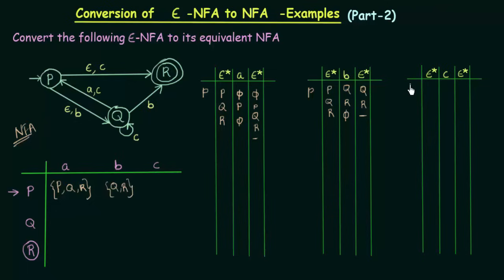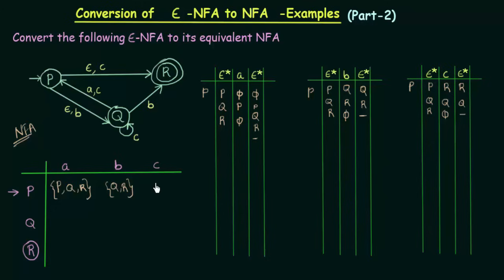Let's do the same for input C. For P, P's Epsilon closure is P, Q and R. P on input C goes to R. Q on input C goes to Q itself. R on C doesn't go anywhere. Epsilon closure of R is only R, and Epsilon closure of Q is also only Q. Since that is Phi, nothing there. So we get R and Q — that means Q and R. P on input C will go to Q and R.